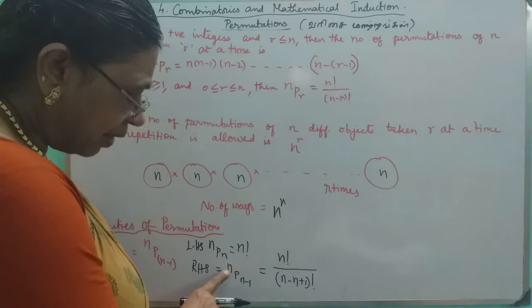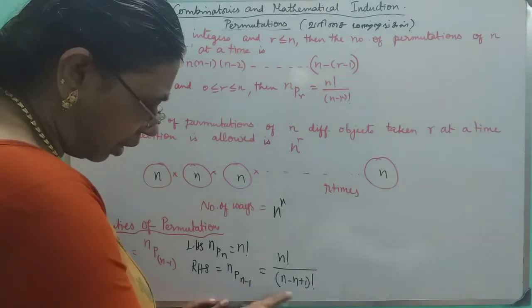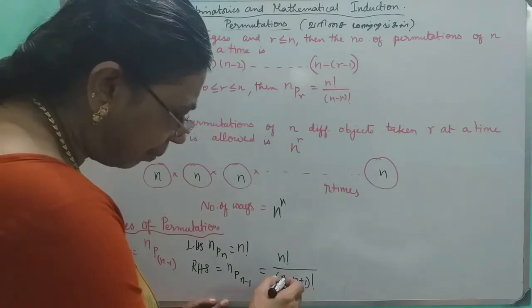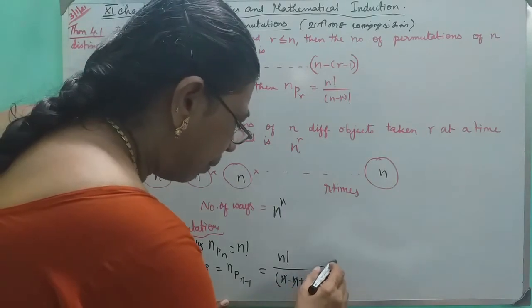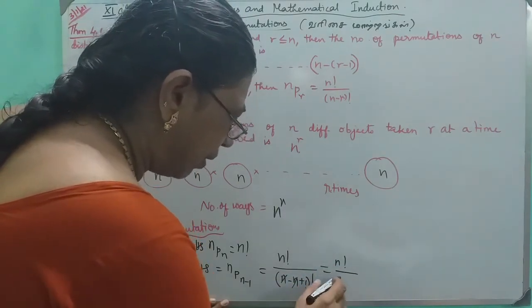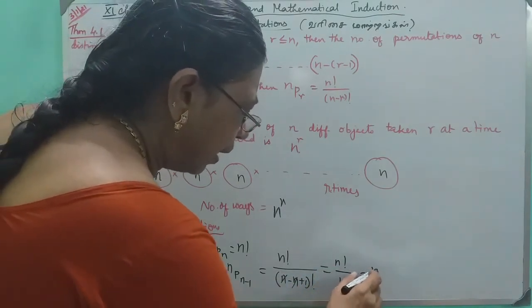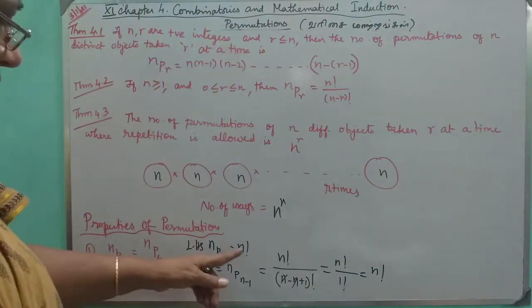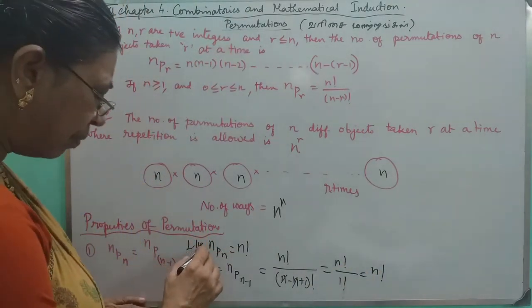Second, we have factorial. This is minus 1. The first is n factorial. The second is 1 factorial. 1 factorial is 1. Now, we have factorial.